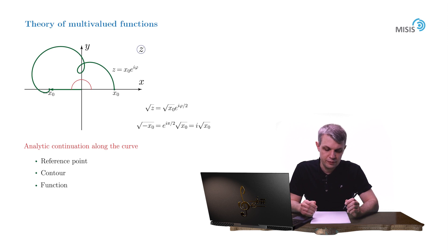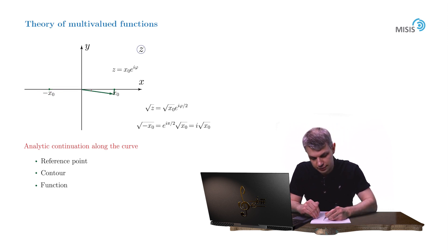But wait a little. What if we choose a completely different path, say a lower semi-circle? Then, for point negative x₀, we obtain a different representation.